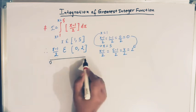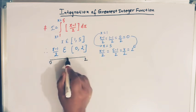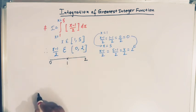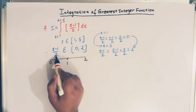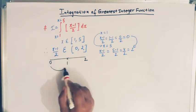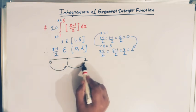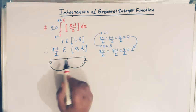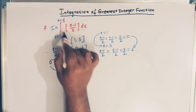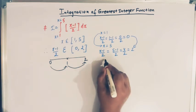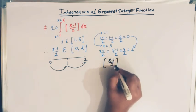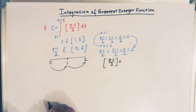If we express this interval on the number line, we have 0 and 2, and the integer which lies between 0 and 2 is 1. So (x minus 1)/2 varies from 0 to 1, and then from 1 to 2. We will now express this greatest integer function as a piecewise function.